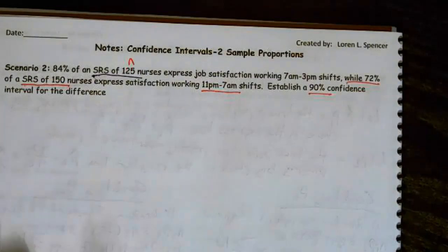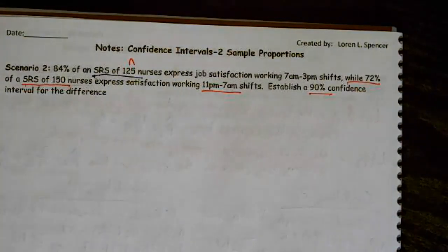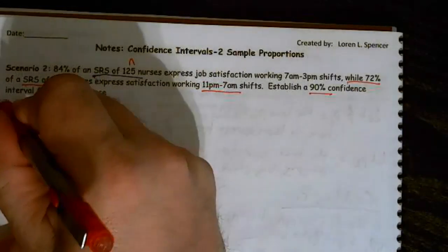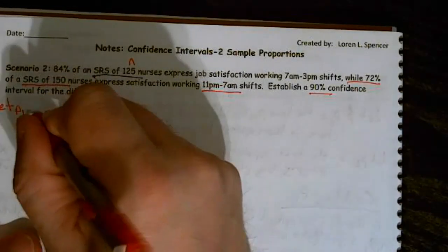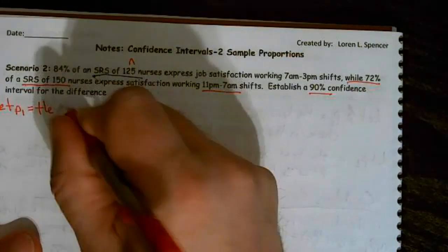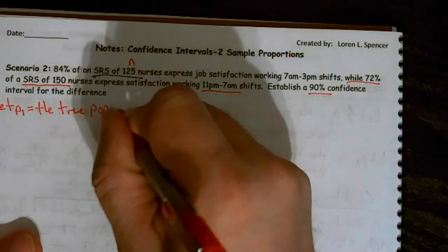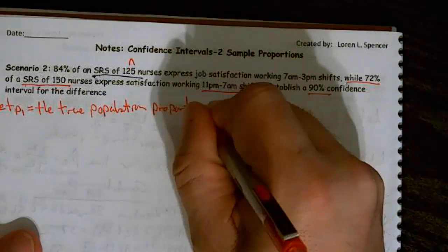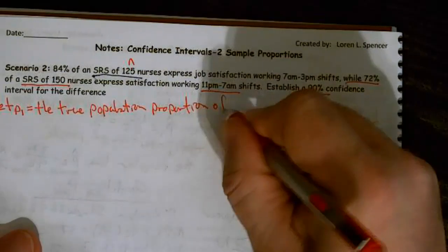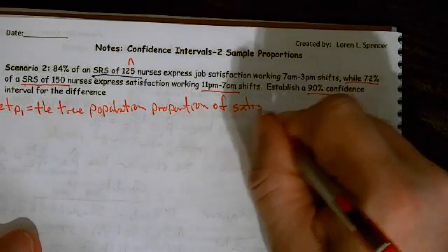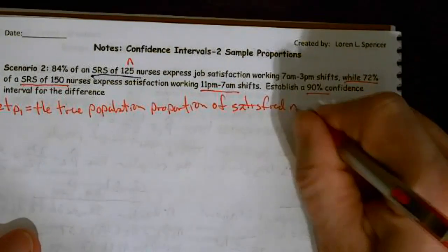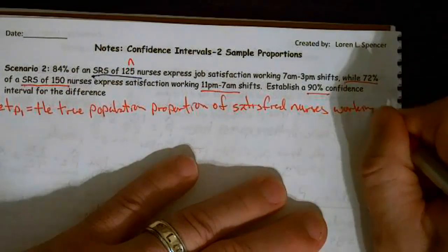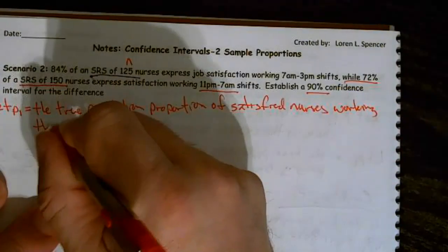So what are we looking at? We're looking at p equals, so we're looking for the day shift versus the night shift. So let p1 equal the true population proportion of satisfied nurses.